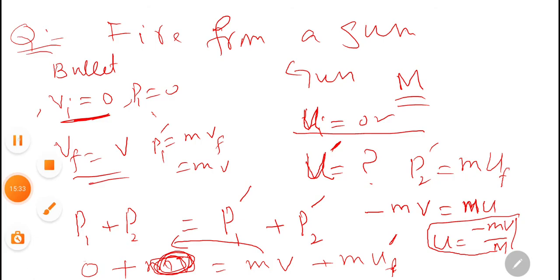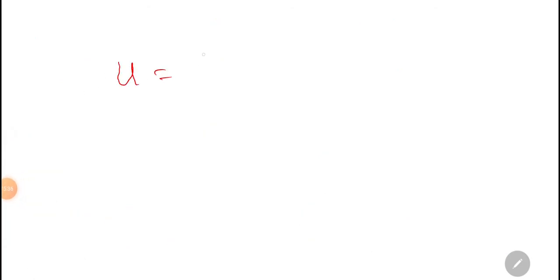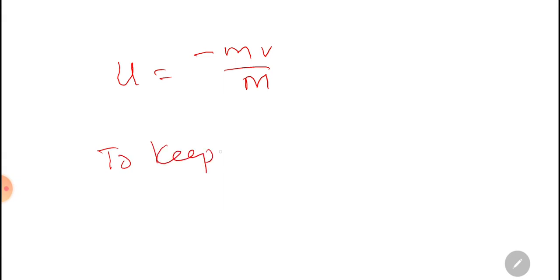The velocity of the gun is equal to u, which equals minus mv divided by M. This means the gun will recoil in the backward direction to keep the total momentum conserved.